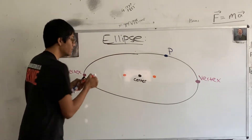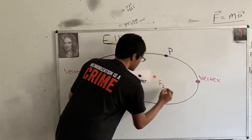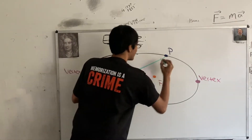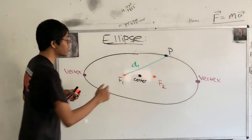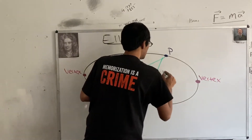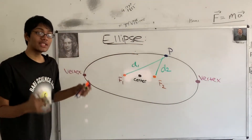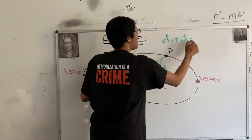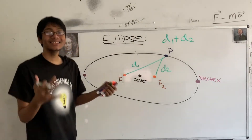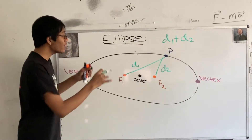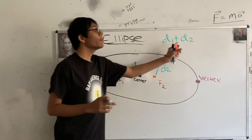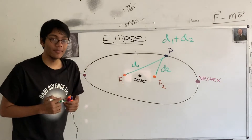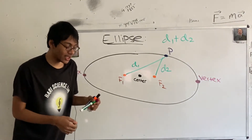The distance from point P to foci 1, let's call that D1. The distance from P to foci 2 is D2. If we add those distances up, D1 plus D2, that's always going to stay constant — no matter what point you take. The sum of the distances to the foci remains the same, and that's the defining quality of an ellipse.